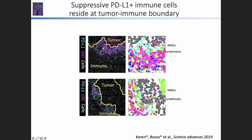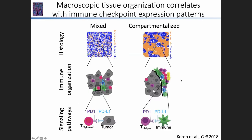Not only are these cells co-occurring in specific histologies — they're also located in very specific regions. If we focus around the tumor-immune boundary in compartmentalized tumors, we find layers of myeloid-derived suppressor cells shielding between the tumor and the layer of lymphocyte cells on the other side, and this repeats itself between patients. The exciting thing about these technologies is that we can really start bridging different length scales — from histology, to cell types and their organization, all the way down to the signaling pathways mediating these interactions.